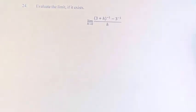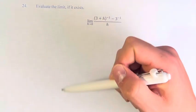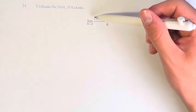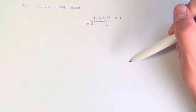Hello and welcome back to another video. In this problem we're asked to evaluate the limit if it exists, or we have the limit as h approaches 0 of 3 plus h to the negative 1 minus 3 to the negative 1 over h.